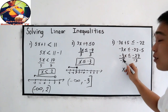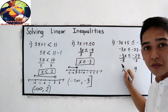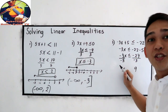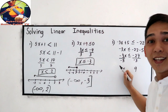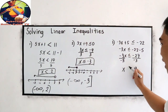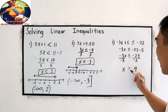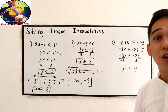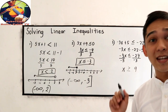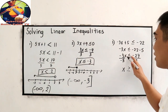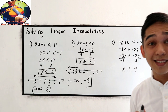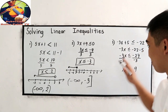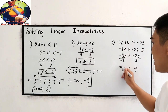Our rule in inequalities is: if we divide by a negative number or multiply by a negative number, we need to change the inequality sign. So the result becomes x is greater than or equal to positive 9. When you multiply or divide by a negative number, change the inequality sign — greater than becomes less than, and vice versa.